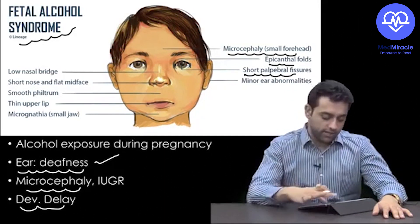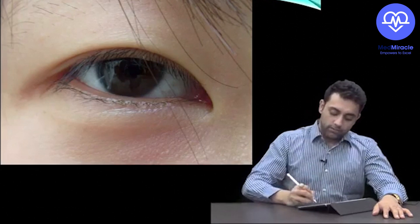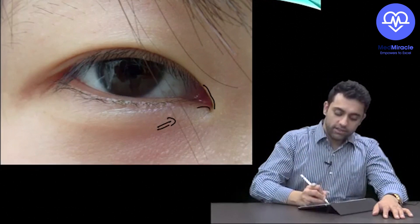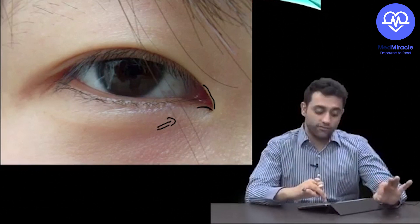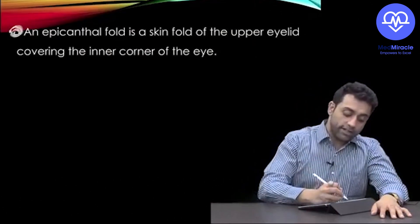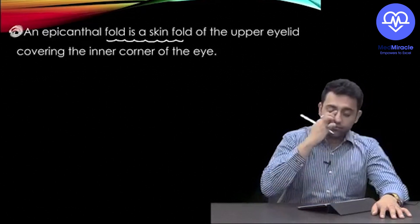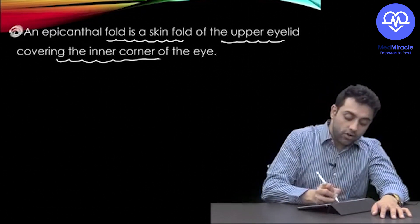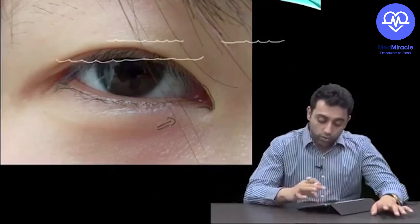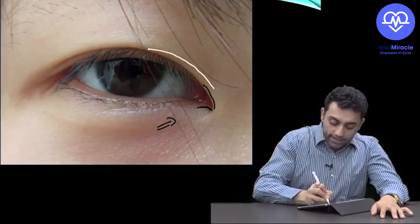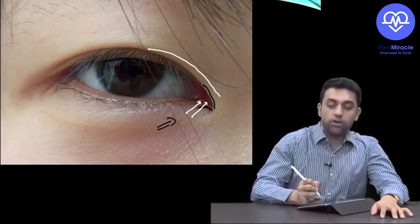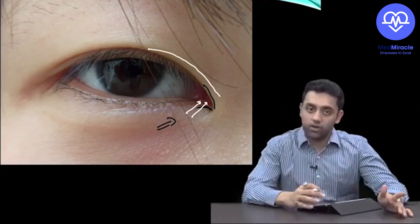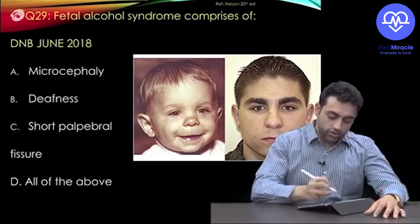Let's do an MCQ to test understanding. First, what is an epicanthal fold? It is a skin fold of the upper eyelid covering the inner corner of the eye — a skin fold of the upper eyelid covering the inner corner of the eye.